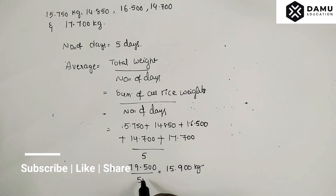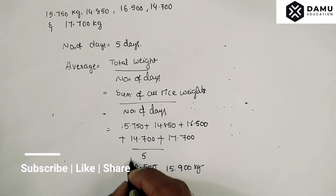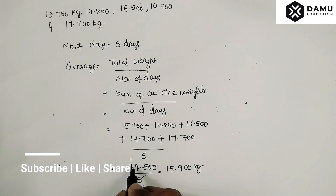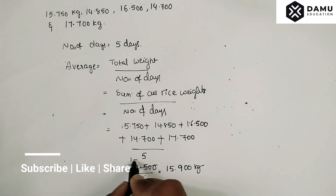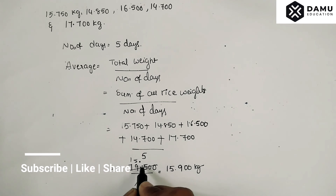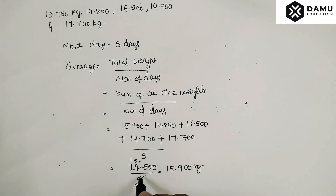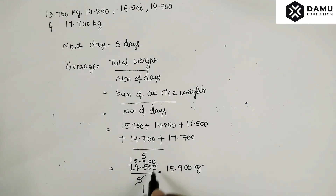Performing the division, 79.500 divided by 5 gives us 15.900 kilograms. So the average rice consumed per day is 15.9 kilograms. Thanks for watching, please subscribe.